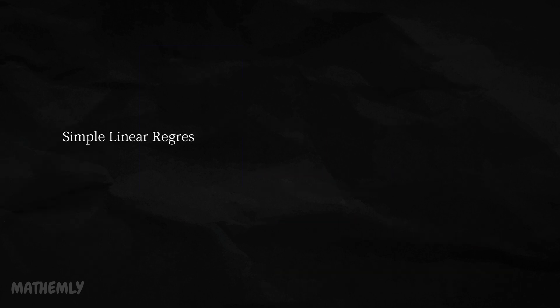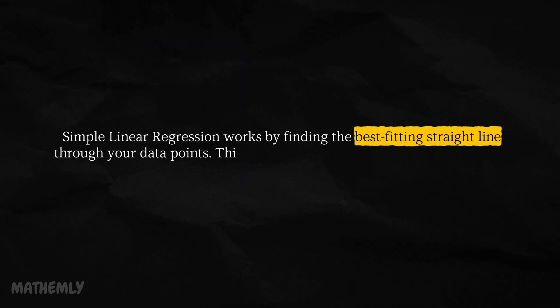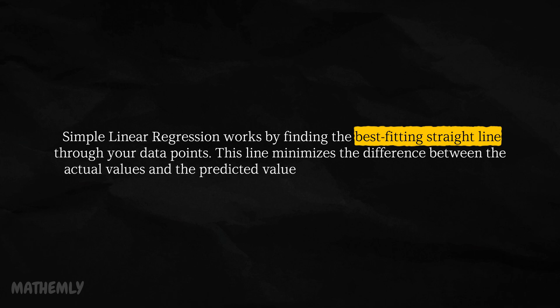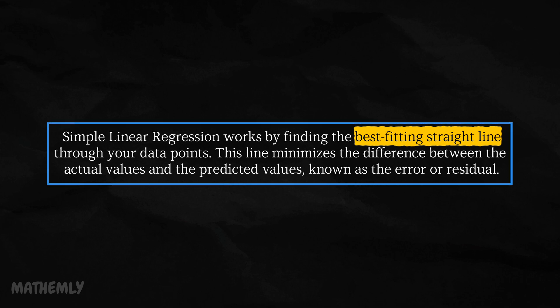Simple linear regression works by finding the best fitting straight line through your data points. This line minimizes the difference between the actual values and the predicted values known as the error or residual. To sum up, simple linear regression is all about uncovering the relationship between two variables and using it to make informed predictions with ease. Let's break down how simple linear regression works into three simple steps.